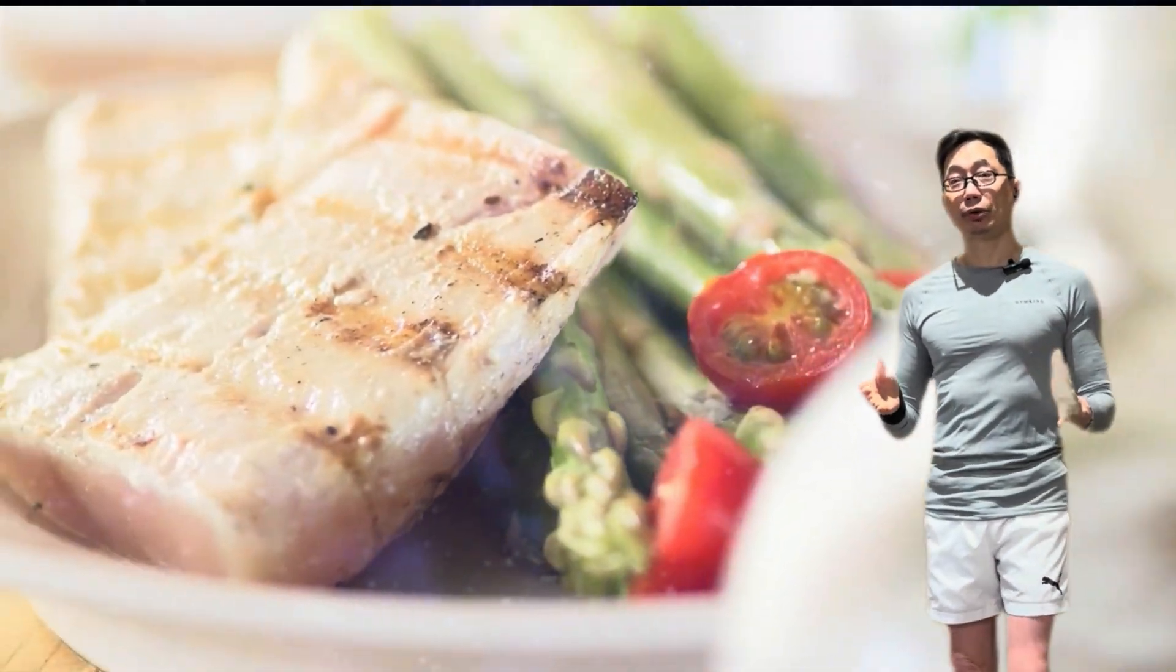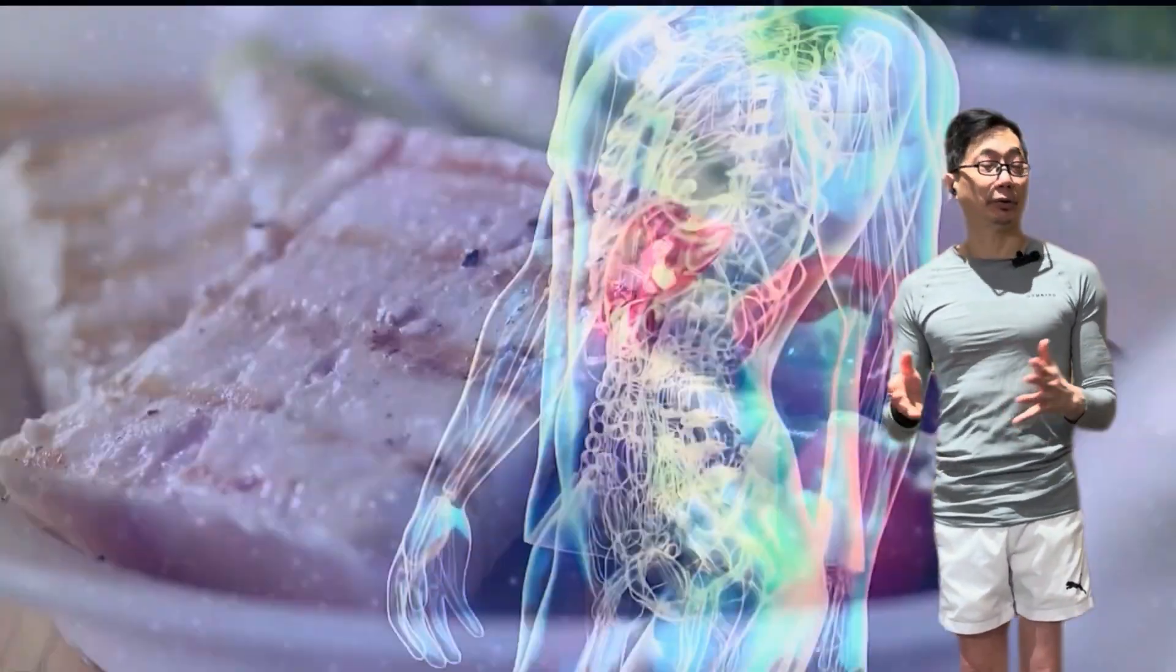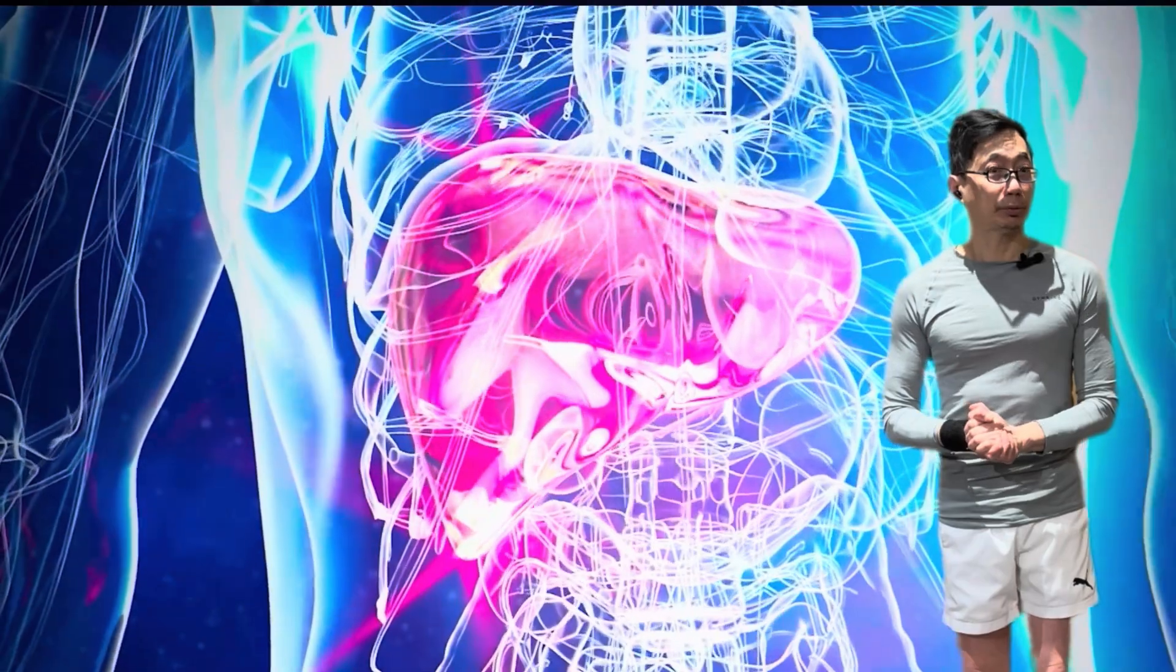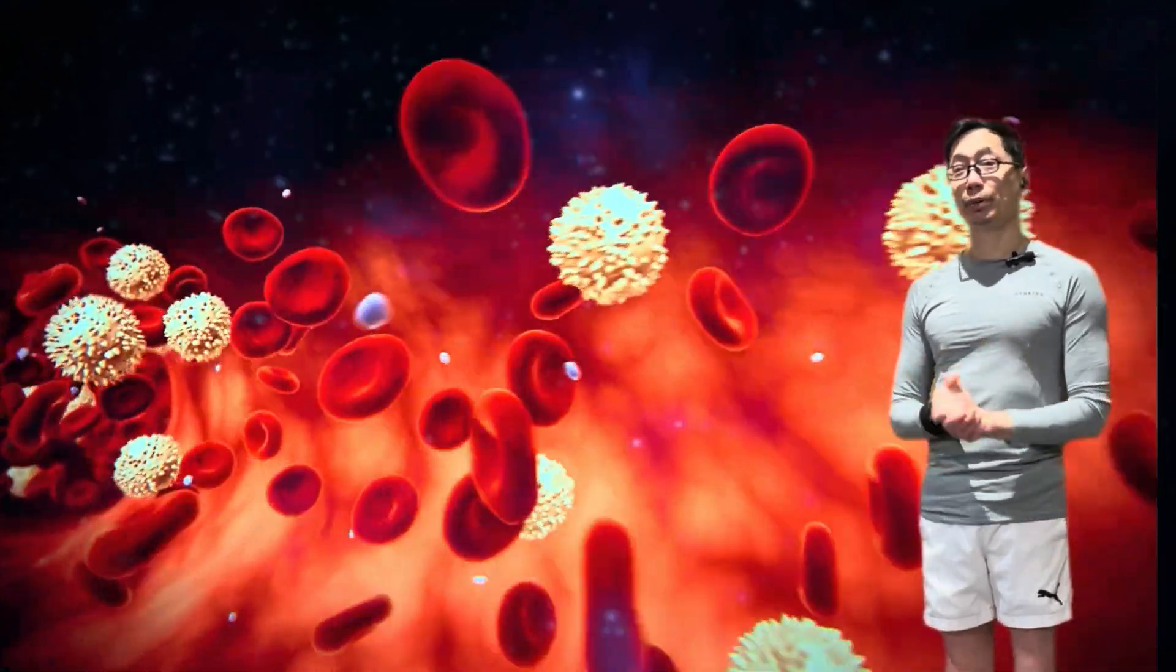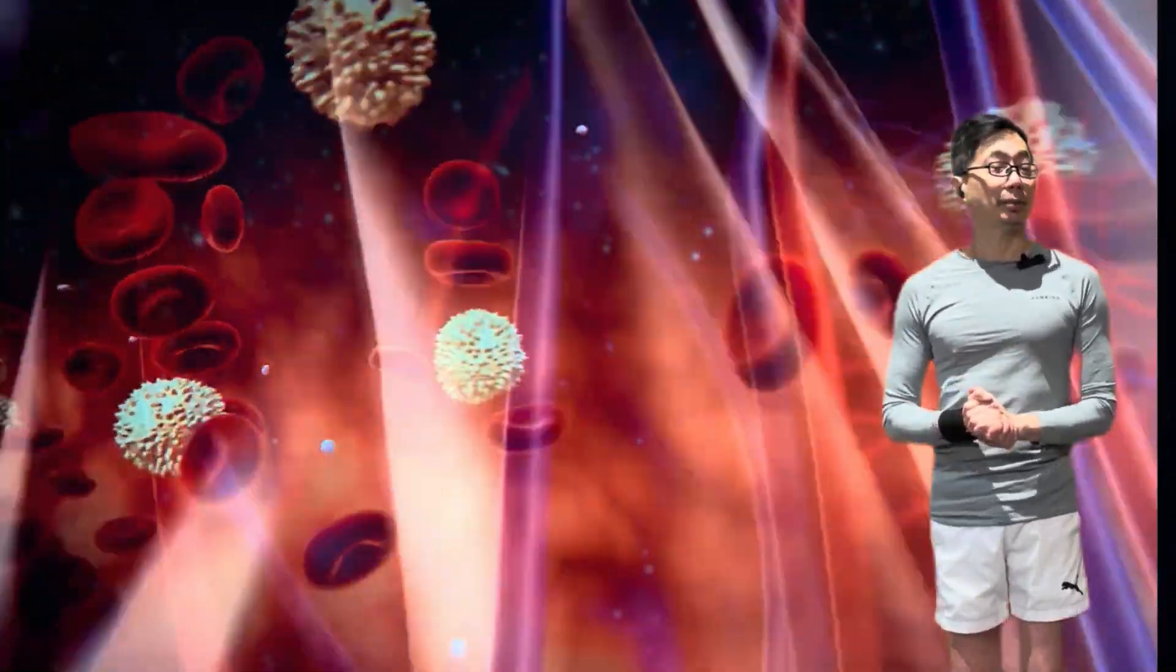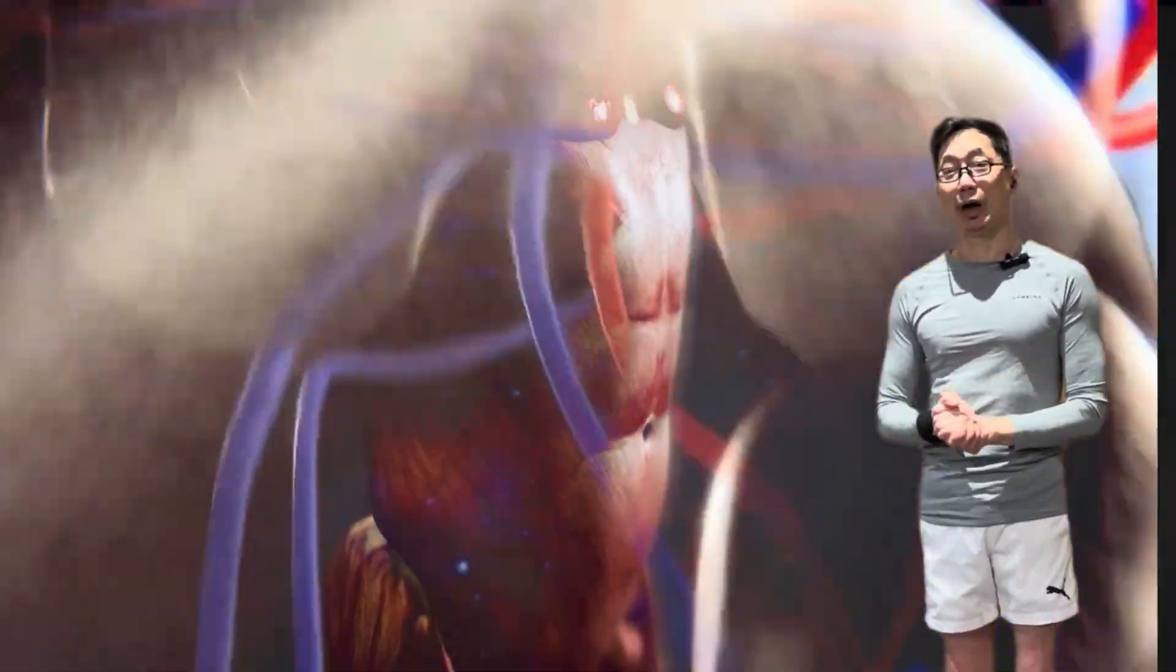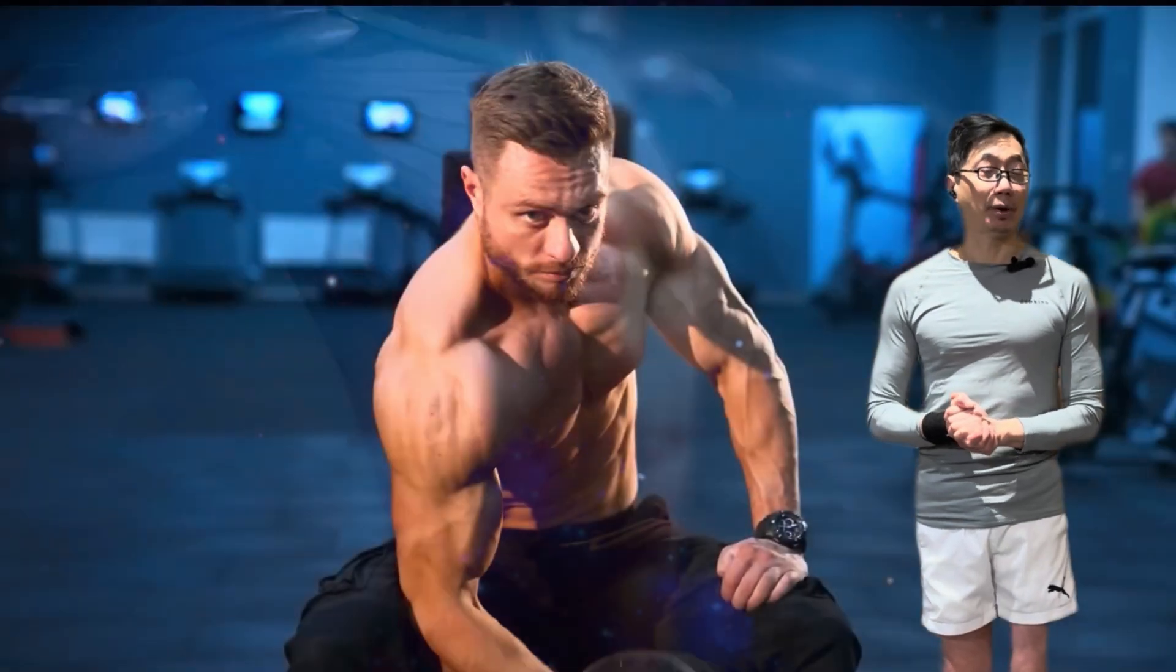And after a protein containing meal, over 50% of the amino acids absorbed will be found in and utilized by the liver. And then the rest will be released as free amino acids into the systemic circulation and become available for the body tissues, including our skeletal muscles that we may have just worked out.